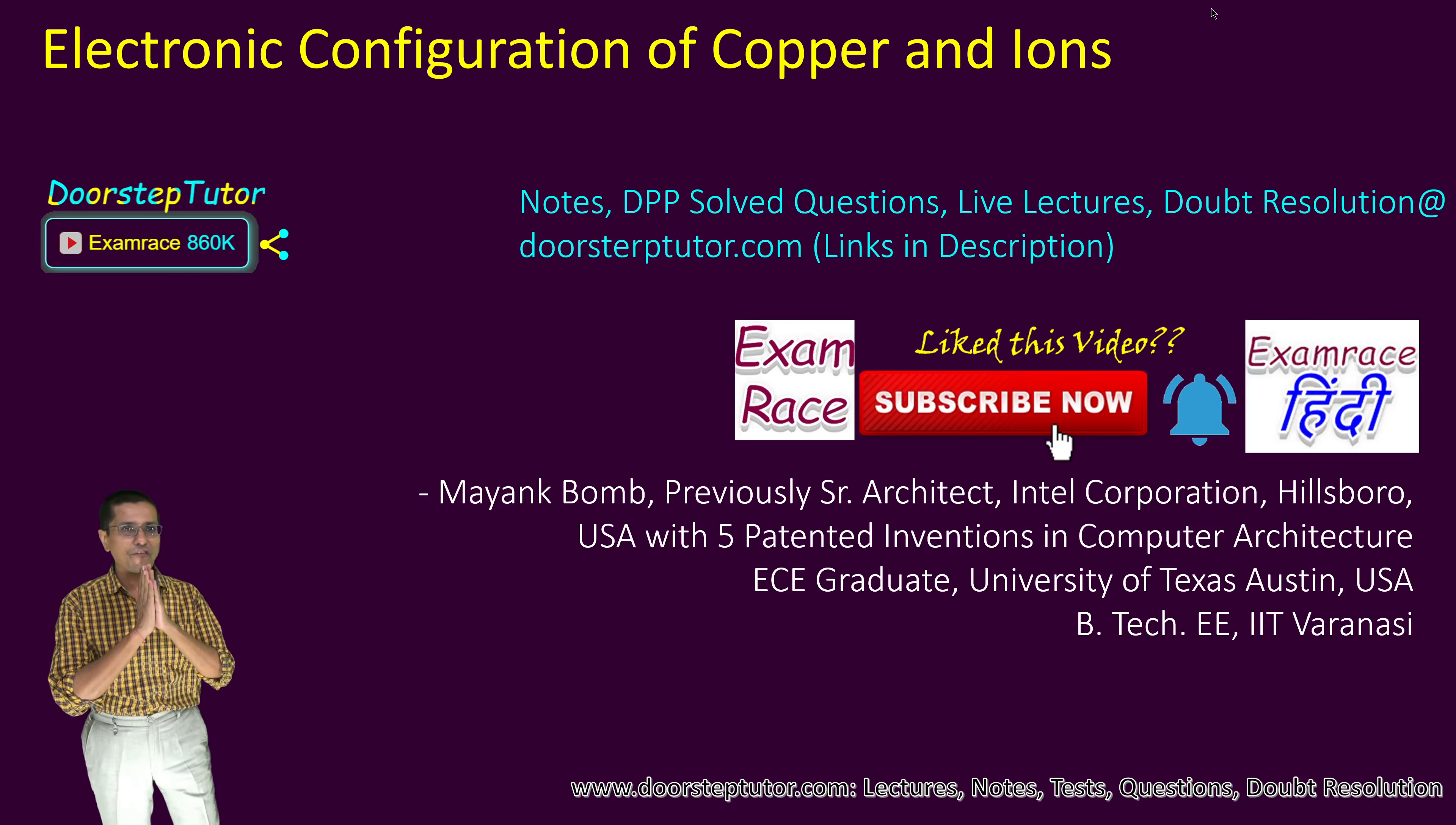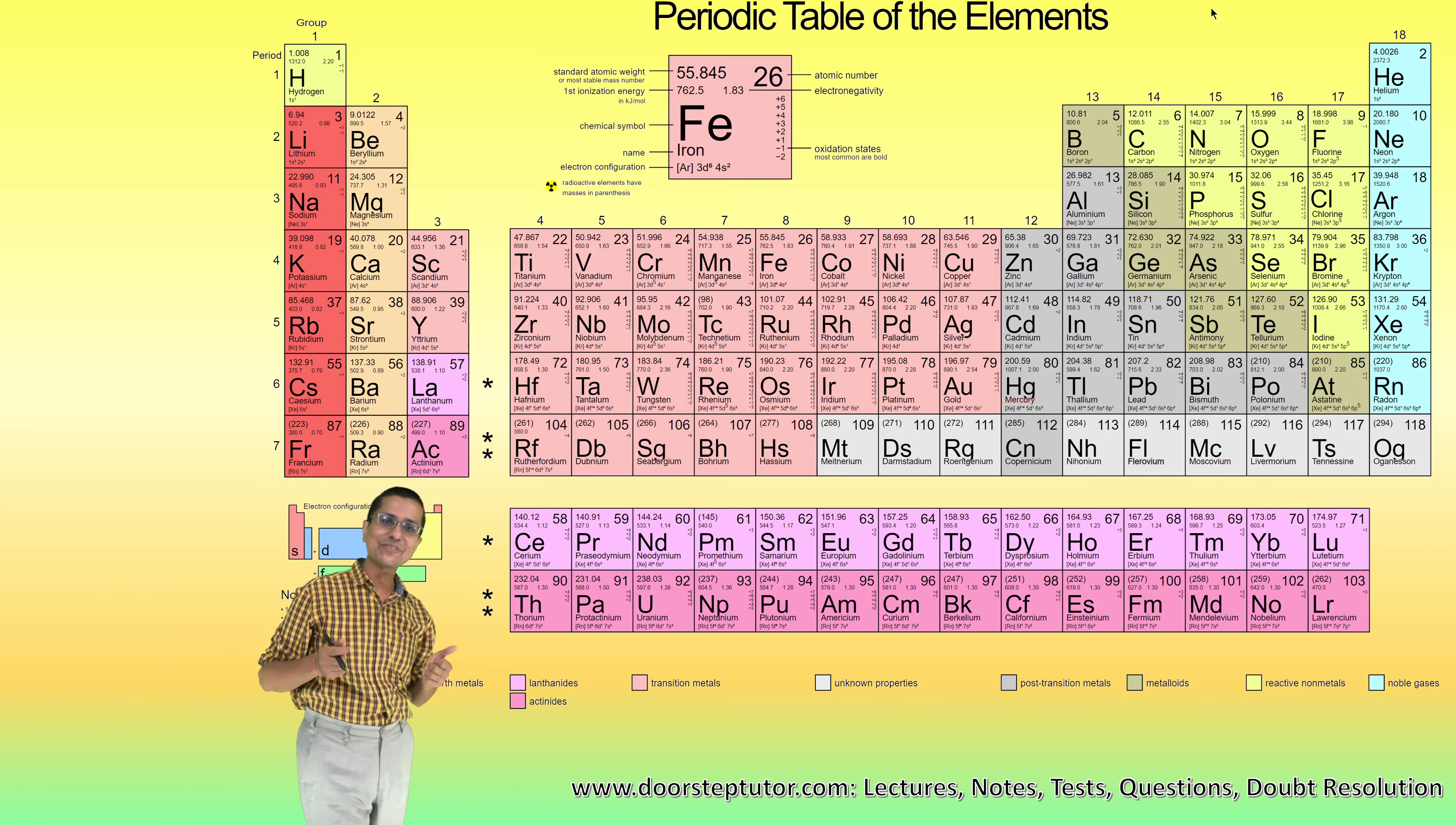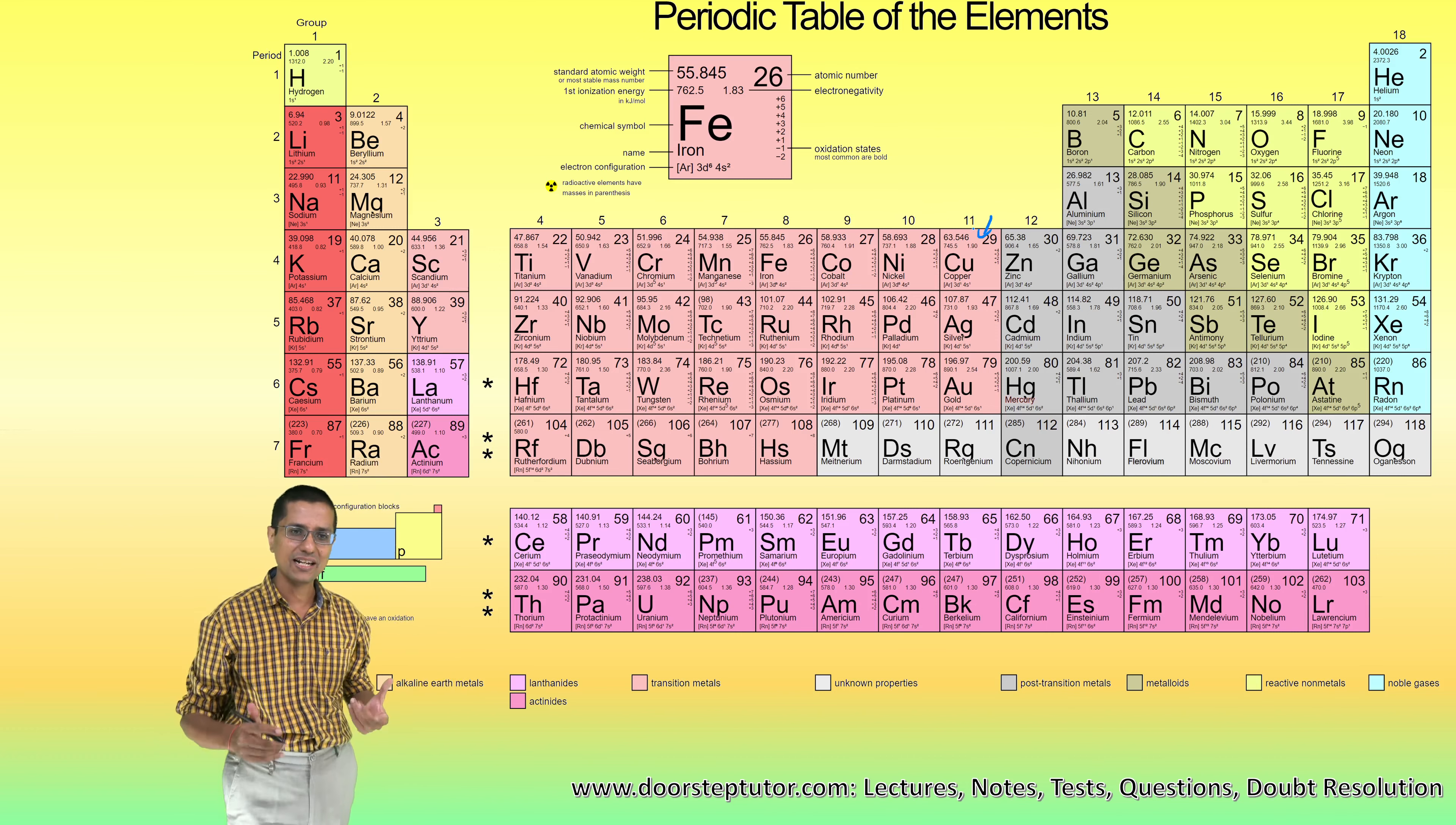The electronic configuration of copper is a favorite question for all kinds of examinations. If I got a dime for every time a student got this question incorrect... What is so typical about copper's electronic configuration? It appears inconspicuous, just one of the normal elements we find, and that's part of the reason why students get stumped on this question.